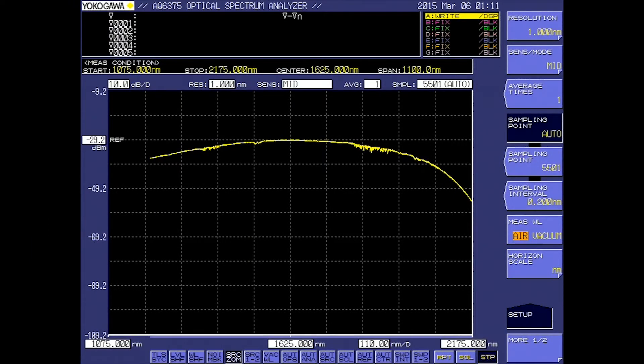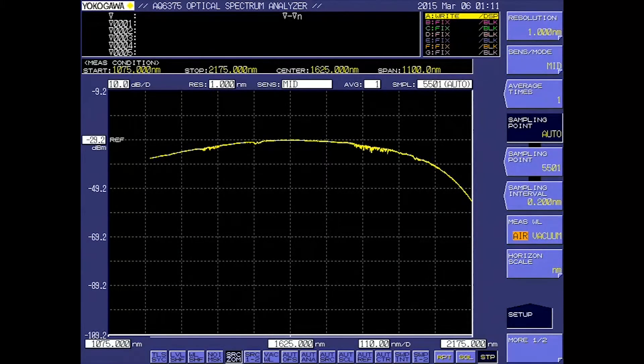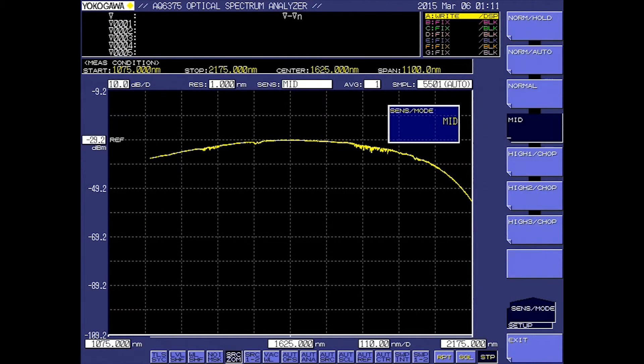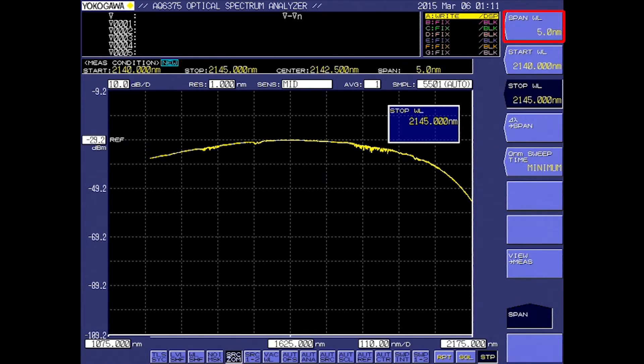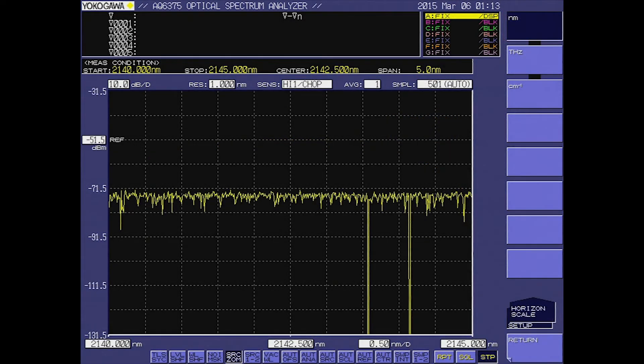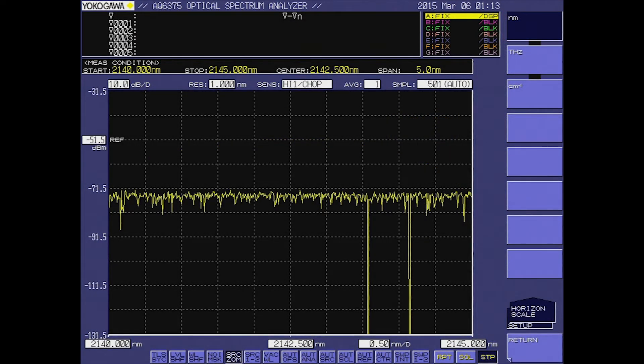For this test, I am going to slow down my sweep by changing the sense mode. Since I need to look at a very small section of the spectrum, I am going to change the span down to 5 nanometers. Notice you can now see the absorption points.